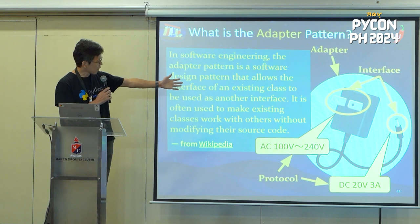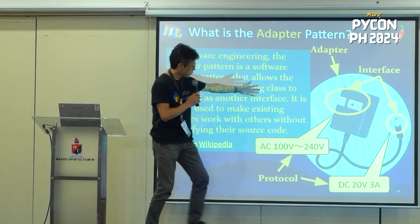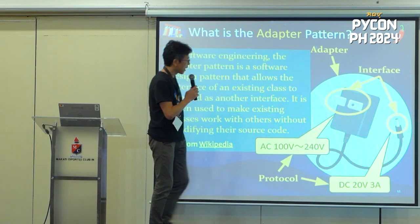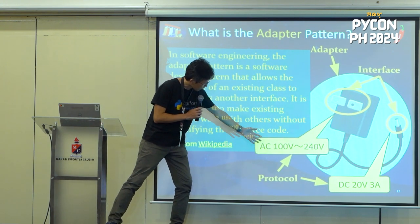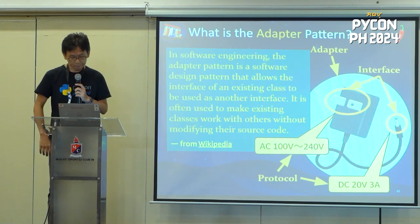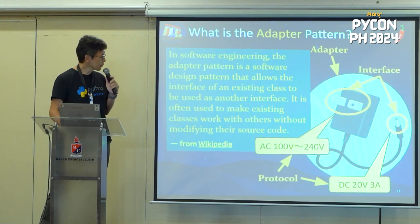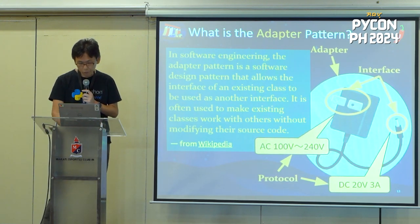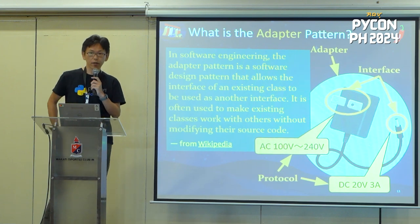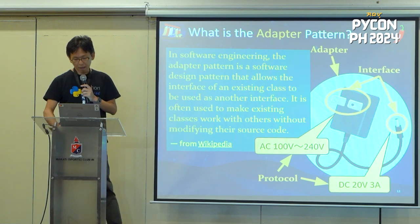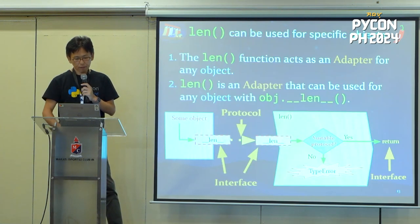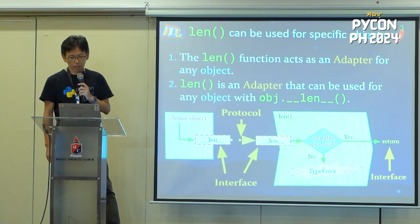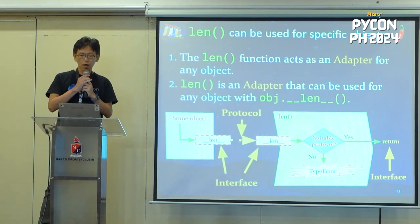And here is a picture of an adapter — an AC adapter. It's a power adapter converting AC from 100V to 240V into 20V 3A of DC. It's an adapter, and its socket connector type is an interface, and voltage and ampere is a protocol of this. Like this, software also uses an adapter pattern anywhere, somewhere, everywhere.